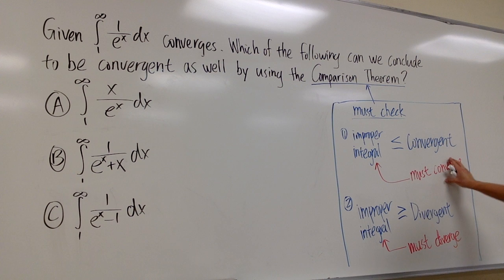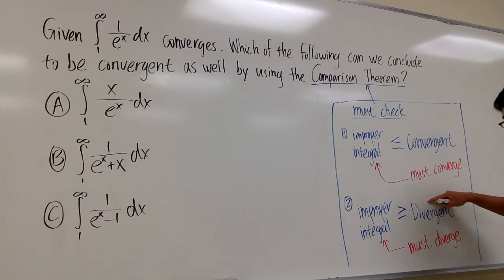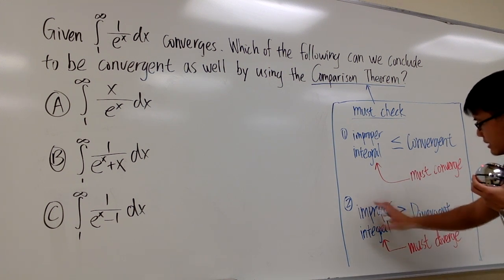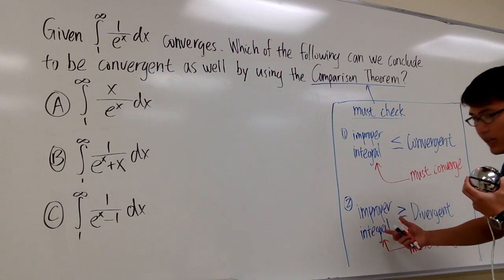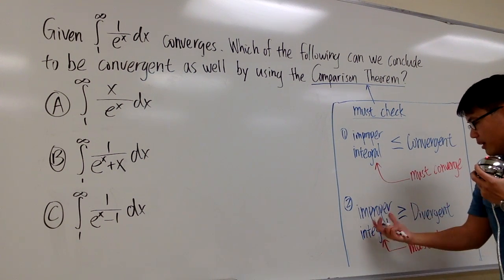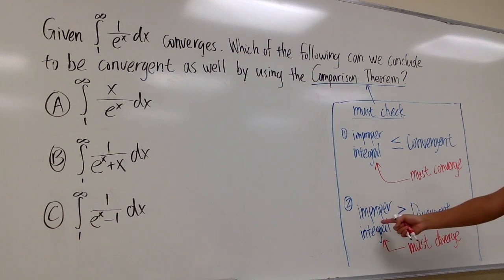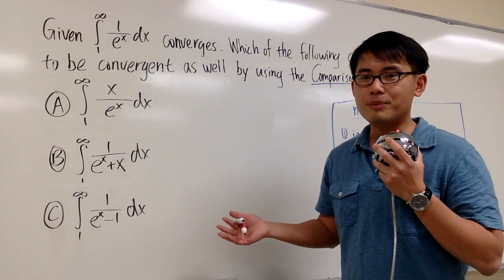On the other hand, if we have an improper integral that is bigger than or equal to a divergent integral we already know — divergent meaning infinite area — then if you have something bigger than or equal to infinity, that means this integral has to be even bigger. And that tells us this integral has to be divergent. That's the idea of the comparison theorem.